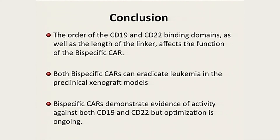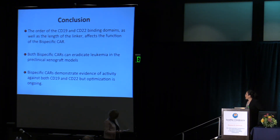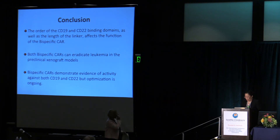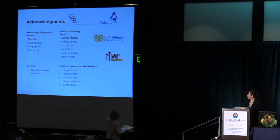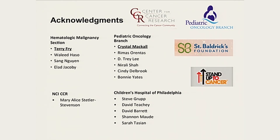In conclusion, the order of CD19 and CD22 binding domains, as well as the length of the linker, really affects the function of the bispecific CAR. Both bispecific CAR designs can eradicate leukemia in preclinical xenograft models, and the bispecific CAR demonstrates evidence of activity against both CD19 and CD22, though optimization is still ongoing. I would like to thank Dr. Terry Fry and Dr. Chris Domeco for their advice and support, as well as all my co-workers, clinical staff, and collaborators.